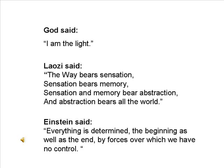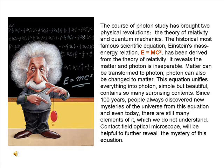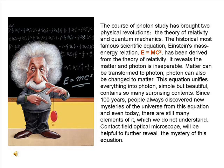Einstein said, 'Everything is determined, the beginning as well as the end, by forces over which we have no control.' The course of photon study has brought two physical revolutions: the theory of relativity and quantum mechanics. The historically most famous scientific equation, Einstein's mass-energy relation E=mc², has been derived from the theory of relativity. It reveals that matter and photon are inseparable — matter can be transformed to photon, and photon can also be changed to matter. This equation unifies everything into photon, simple but beautiful, containing so many surprising contents.